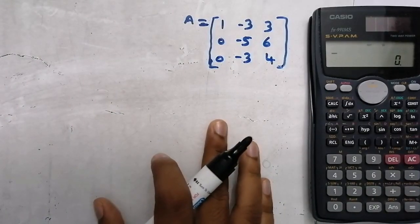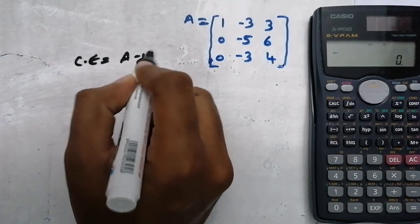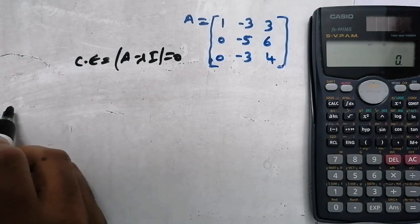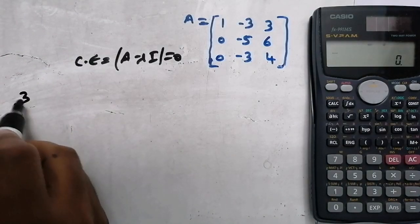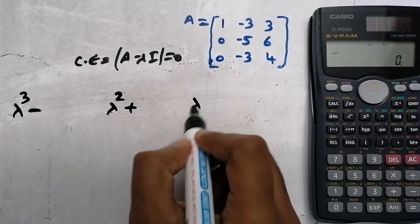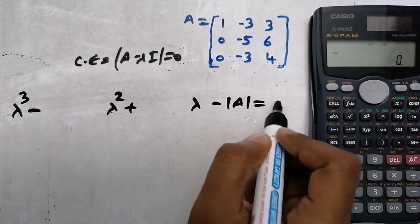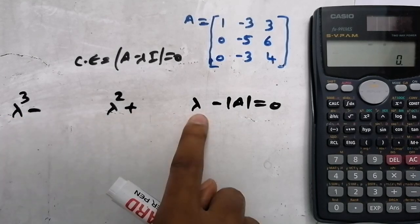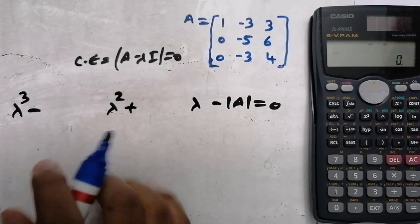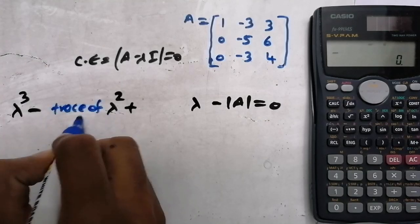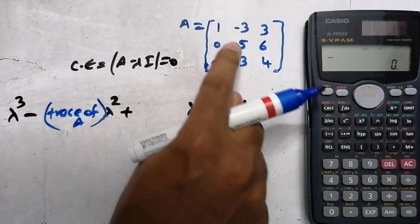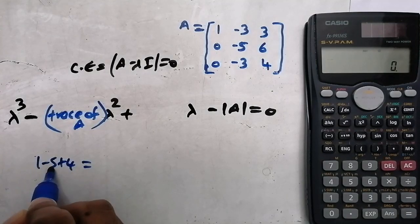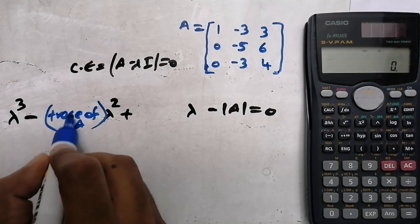If you are solving this manually, you start by writing the characteristic equation: determinant of (A minus lambda I) equals 0. There is a shortcut: lambda³ minus (trace of A)·lambda² plus (sum of minors)·lambda minus determinant of A equals 0, with alternating minus and plus signs. The coefficient of lambda² is the trace of A — the sum of the diagonal elements: 1 minus 5 plus 4 equals 0. So that coefficient is 0.